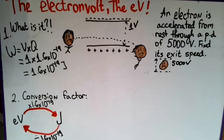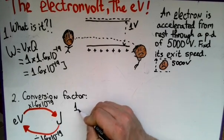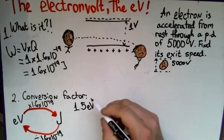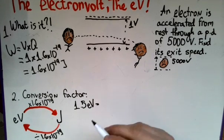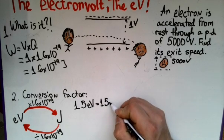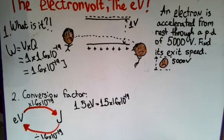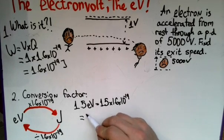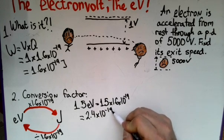We can put those two rules into practice. For example, let's convert 1.5 electron volts. We can see that we're going from electron volts to joules, so all we need to do is multiply that number by the elementary charge, which is 1.6 × 10⁻¹⁹. And that will give us 2.4 × 10⁻¹⁹ joules.